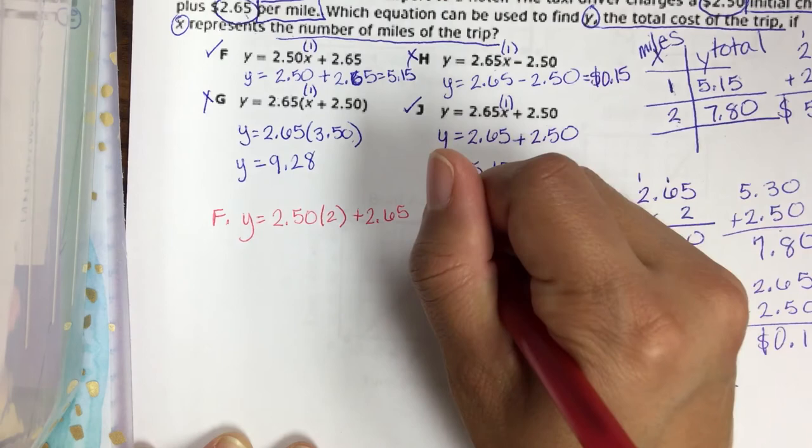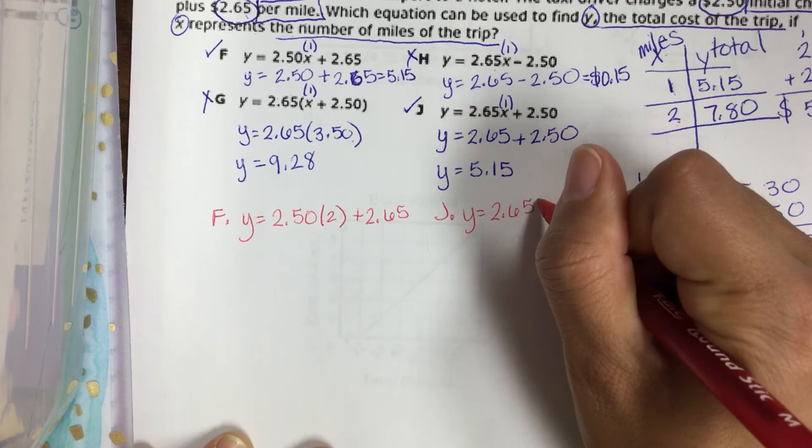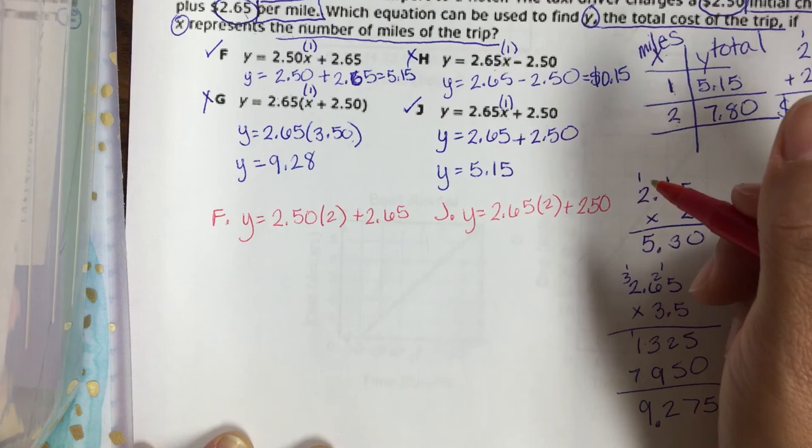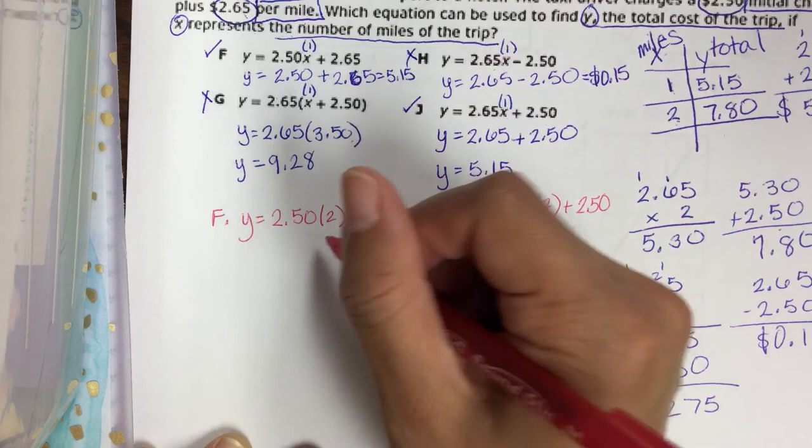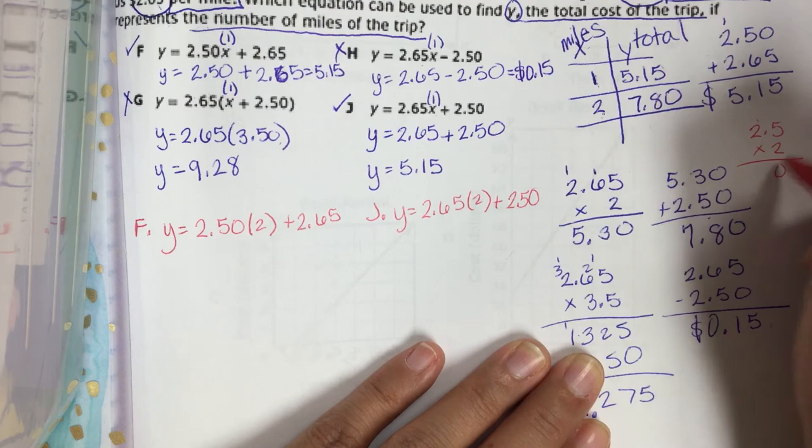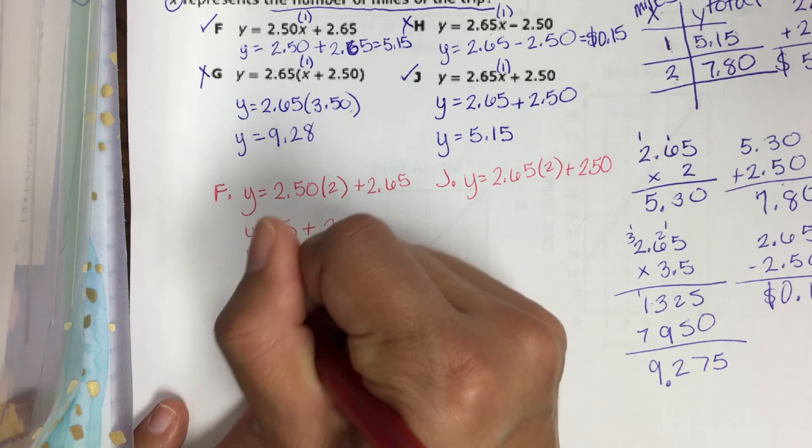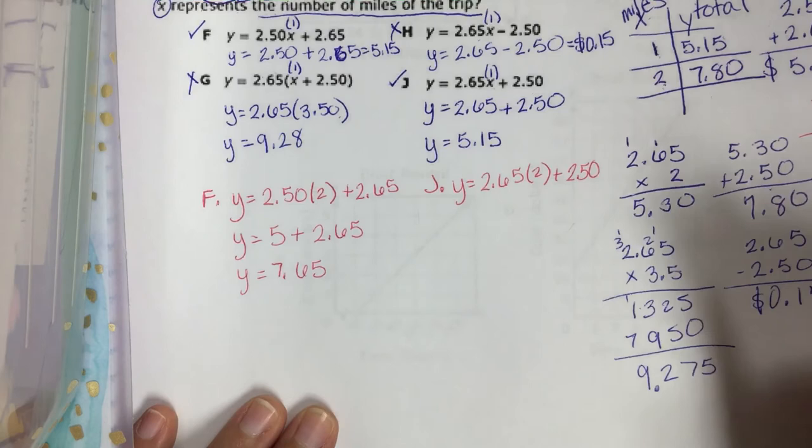And then for J, I'm going to plug in 2 for X. Y equals $2.65 times 2 plus $2.50. Let's figure this out. $2.50 times 2 first. 2.5 times 2. That gives me $5. And I still need to add $2.65 there. Which is going to be $7.65. So close, but I wanted $7.80. Let's try J.